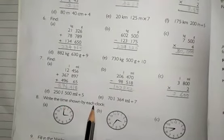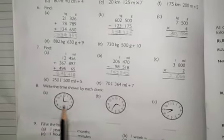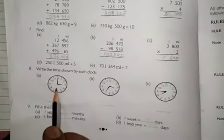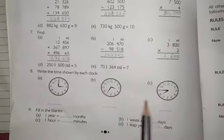Question number 8. Write the time shown by each clock. See the clock and write its time. A number is 3 o'clock. You write the time of each clock.